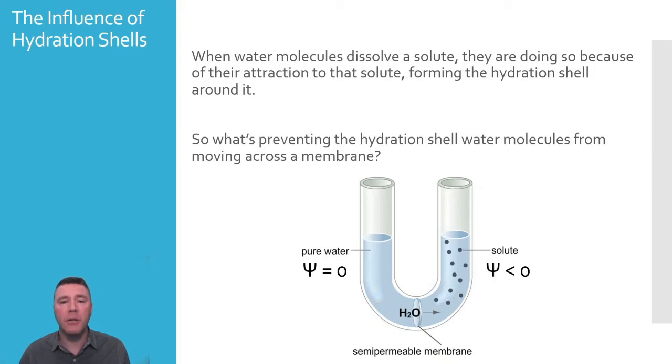Each of those solute particles has a collection of water molecules surrounding it, the hydration shell. Now let's use our imagination. On the left would be some quantity of water molecules. Since it would be impractical to count each water molecule, let's instead say that there are X number of water molecules on the left.